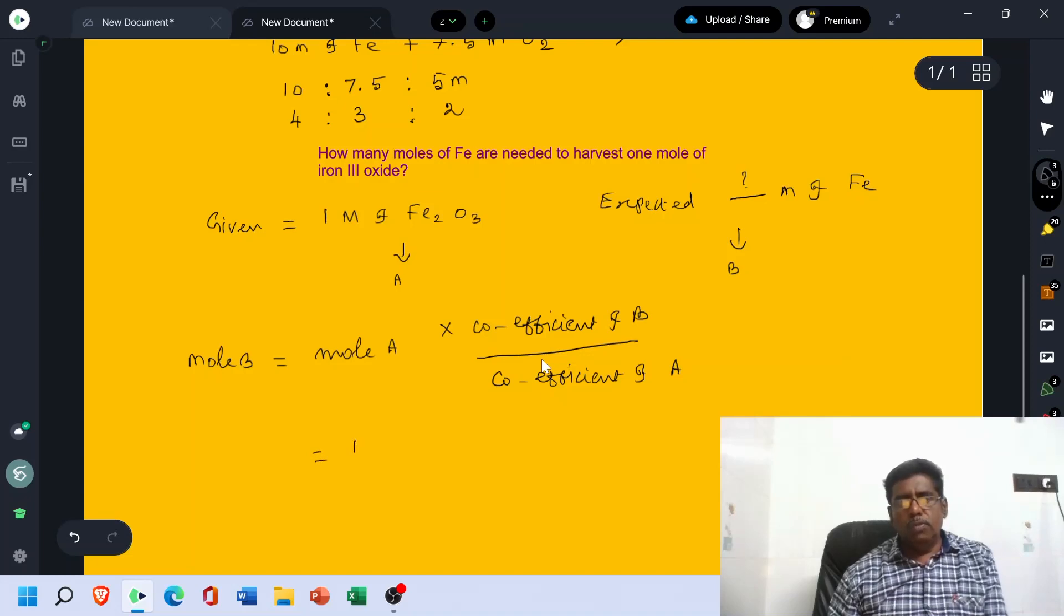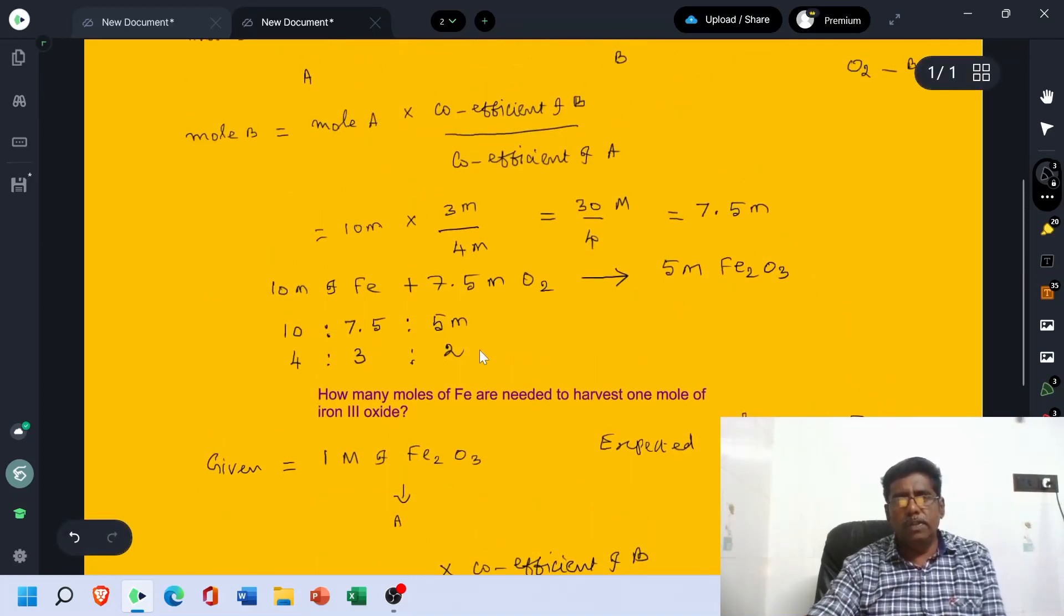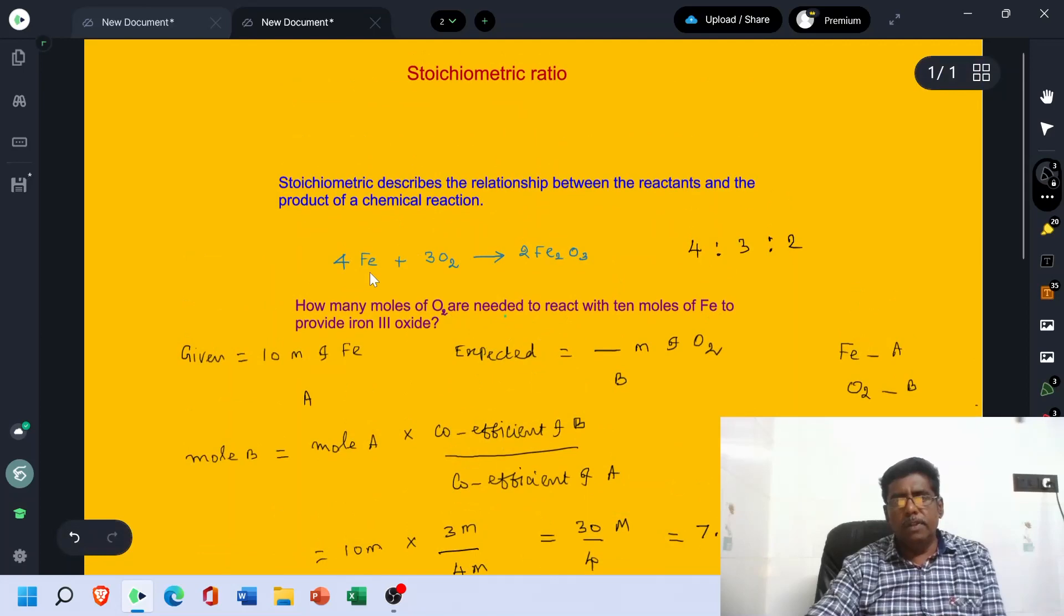Mol A, that is 1 mol given, 1 mol of Fe2O3. And here, A is Fe2O3, B is Fe. Coefficient of B. What is the coefficient of Fe in this equation? The balanced equation? 4.